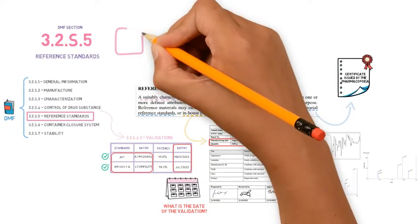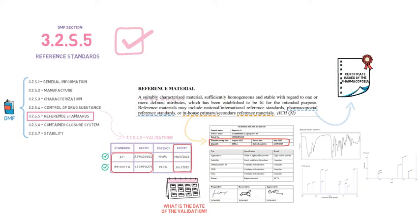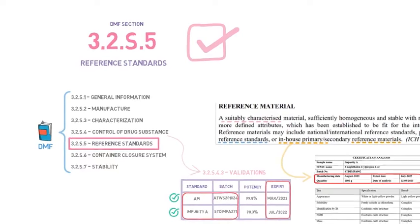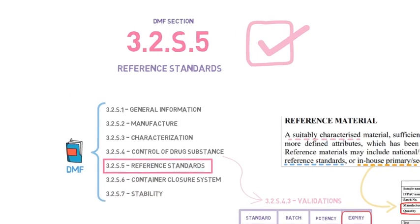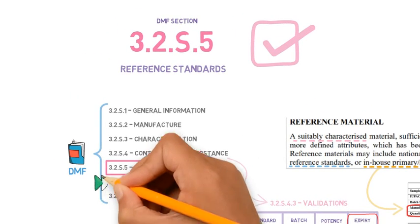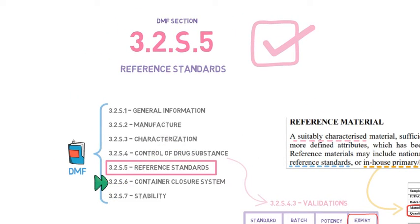But in general, this is a very simple and straightforward chapter of the DMF. And this is all for section 3.2.S.5. The next video will be about section 3.2.S.6, which is about the container closure system, the packaging of the API. Stay tuned!